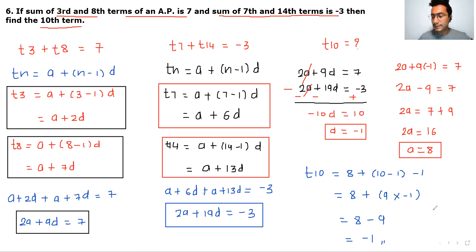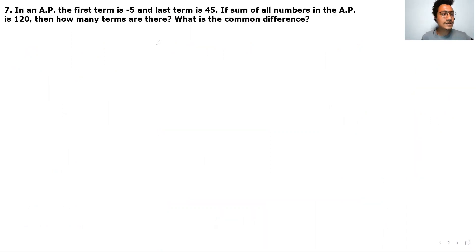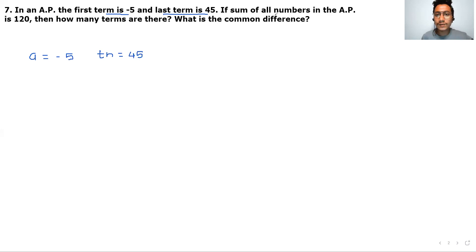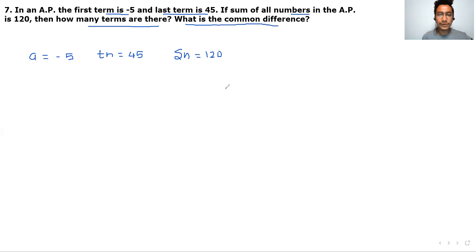The answer was a little lengthy but quite simple. Now moving to question number 7. Question number 7: in an AP, the first term is minus 5, and the last term is 45. The sum of all terms is 120. Find how many terms are there and also find the common difference.